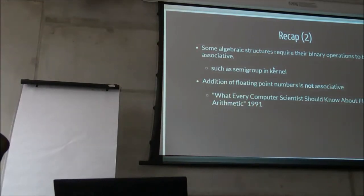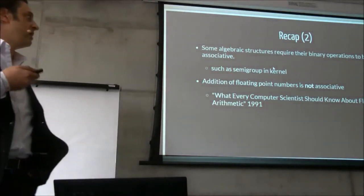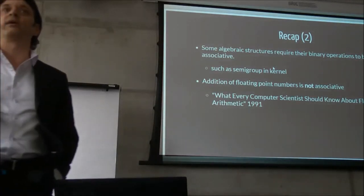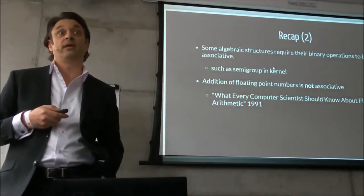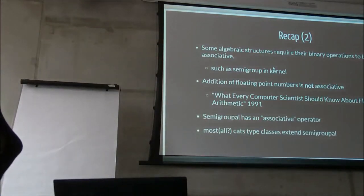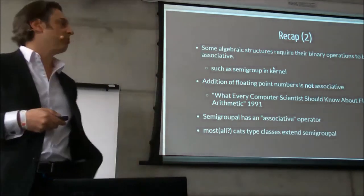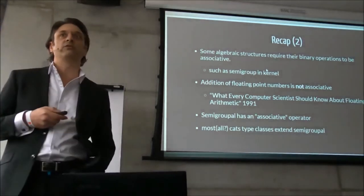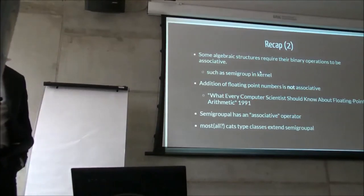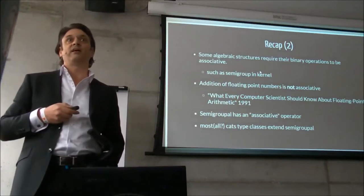A very common one is the semi-group that we find in Cats kernel. That's used a lot for map reduce. This is an interesting one: the addition of floating-point numbers is not associative, and that covers doubles. This goes back to 1991. If you're using a double, if you create an instance of a type class from double, it won't be associative, unfortunately. And moving on, the category theory equivalent is the semigroup, also has an associative operator. Not technically, it's done by isomorphism. The point here is that virtually every single Cats type class actually extends from semigroup. And if semigroup is not associative, that means all of your type classes, if you use double, won't obey the laws.